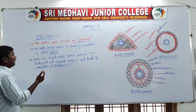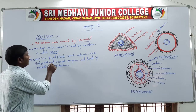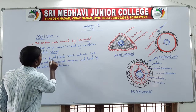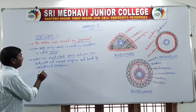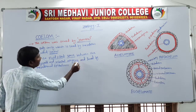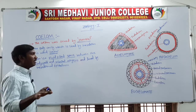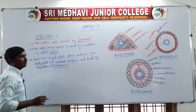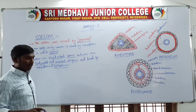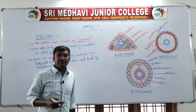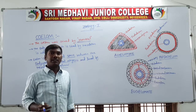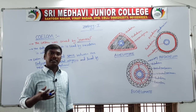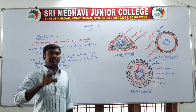Visceral organs include the alimentary canal, heart, lungs, liver, and kidneys. The body wall is the outer layer surrounding these visceral organs. The coelom is the fluid-filled space present between the body wall and visceral organs, lined by the mesodermal epithelium.